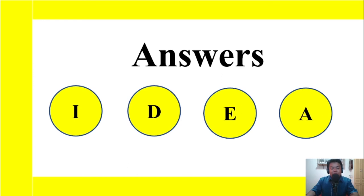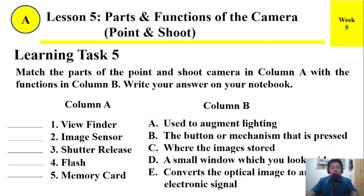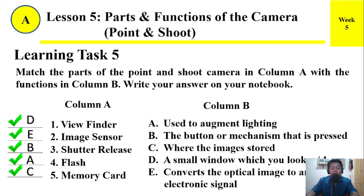Here are the answers. Number 1: Viewfinder — the correct answer is D, a small window which you can look with one eye. Number 2: Image sensor — the correct answer is E, converts the optical image to an electronic signal. Number 3: Shutter release — the answer is B, the button or mechanism that is pressed. Number 4: Flash — the answer is A, used to augment lighting. Number 5: Memory card — the answer is C, where the image is stored.